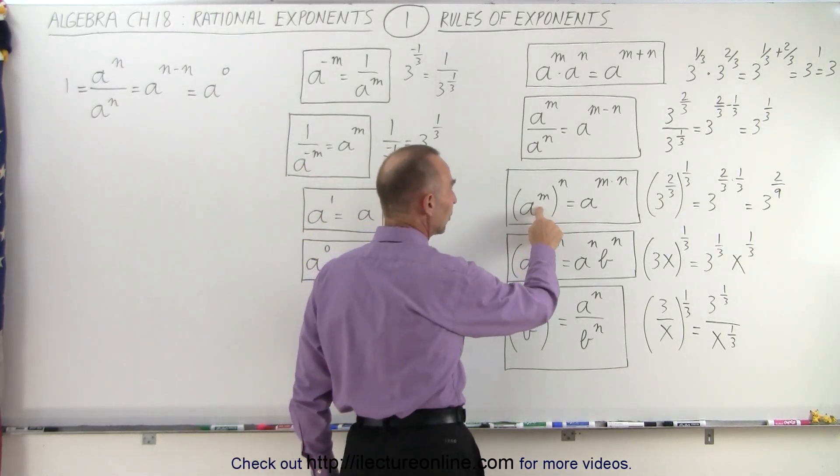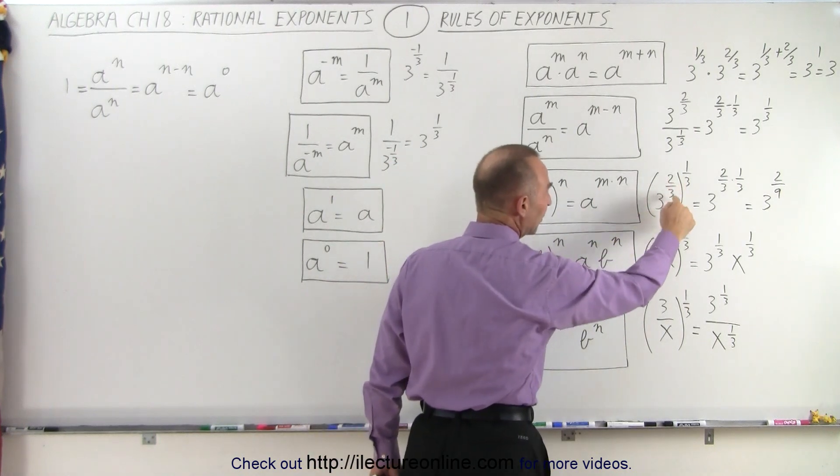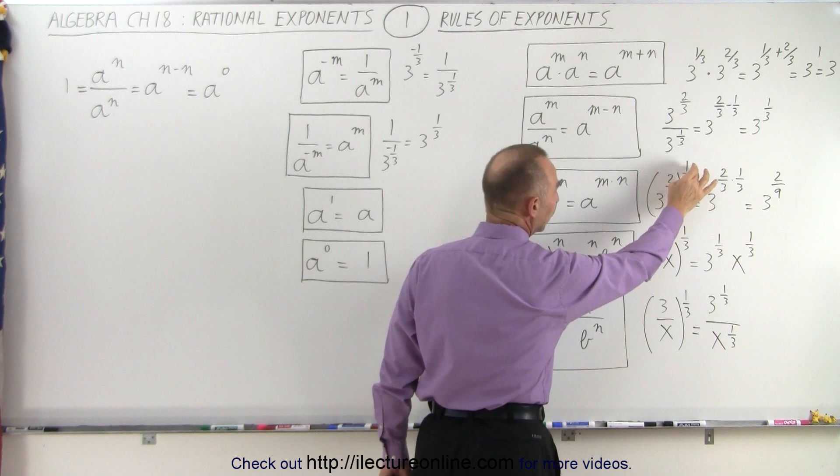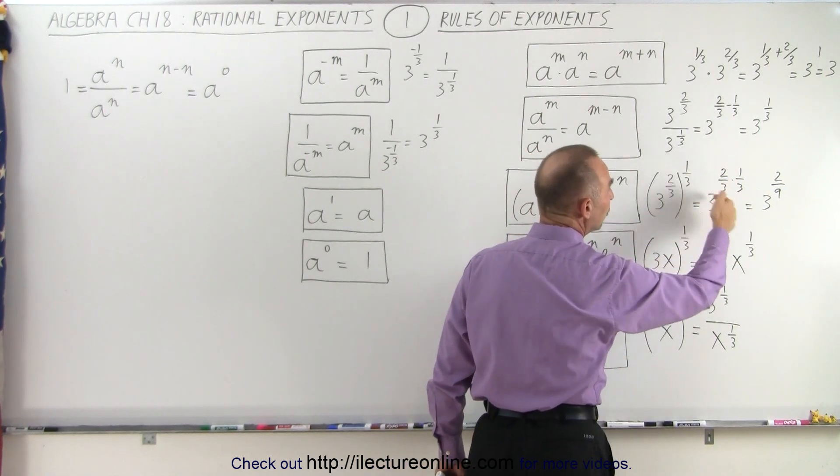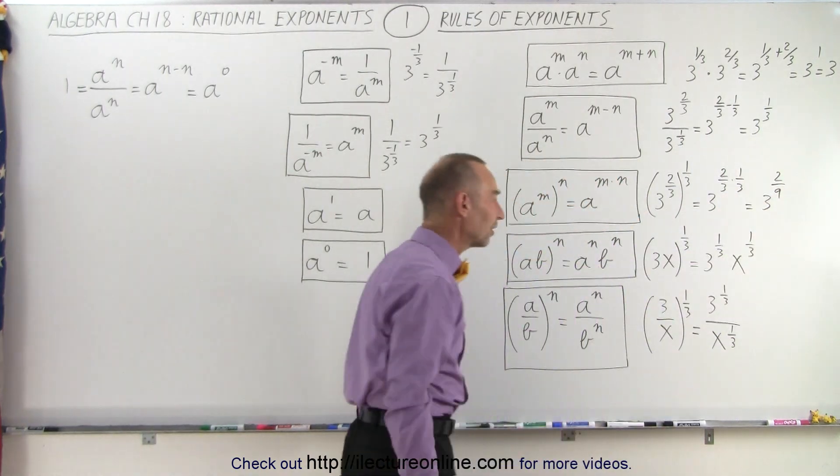Now here we have a to the m raised to the n power, so we multiply the exponents. We do the same with the fractional exponents. Notice that three to the two-thirds, all raised to the one-third, is simply three to the two-thirds times one-third. We use the rules for fractions, and that becomes two to the ninth as the exponent.